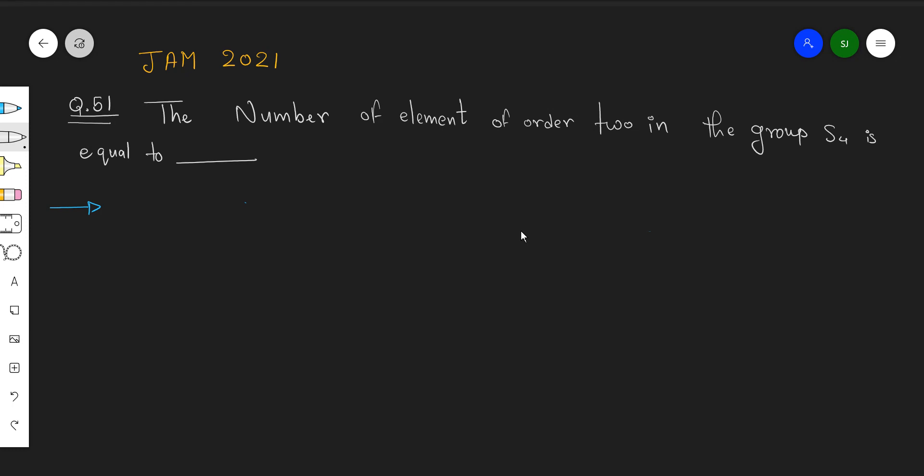No options have been given and we always want to find out the way which will help us to get the answer quickly without noting down each element individually. Here I want the order of an element to be equal to 2 and we are working in permutation.